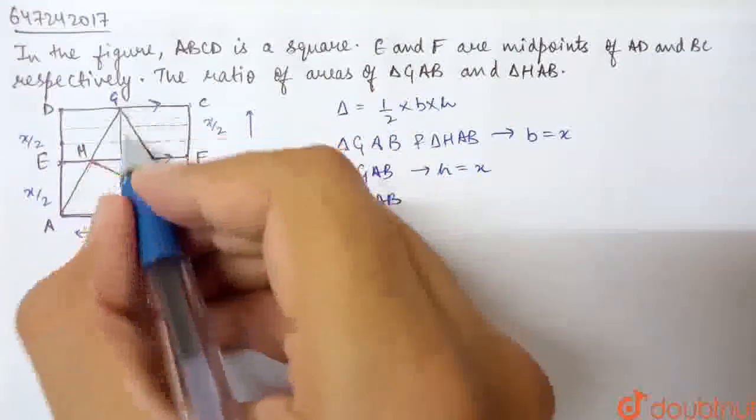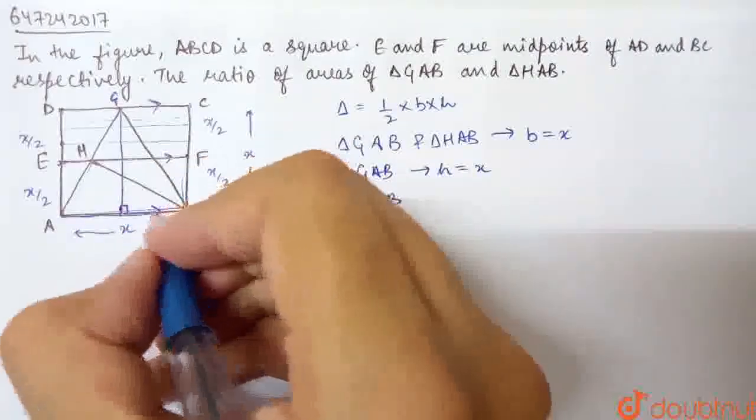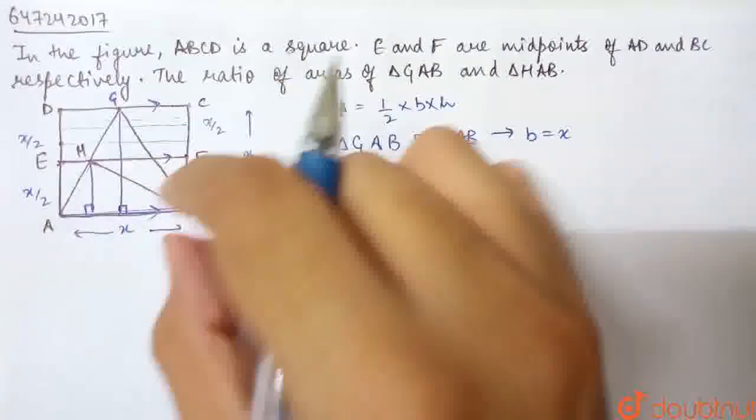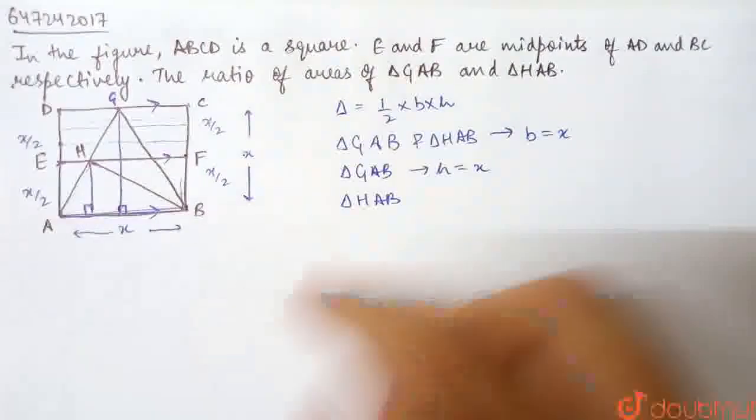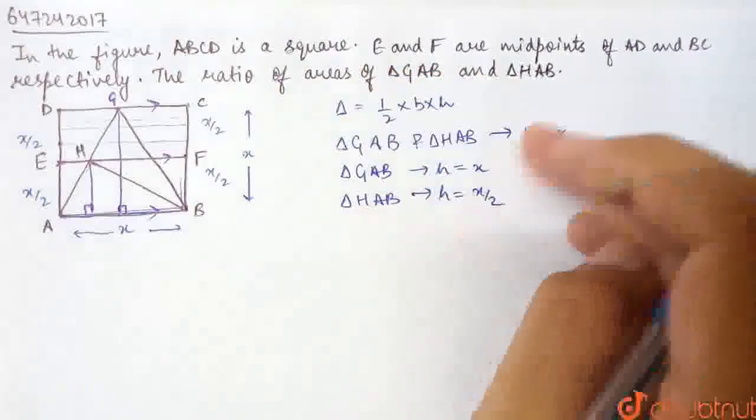It will be parallel to this line. So if I drop the altitude here, the distance between these two parallel lines is X/2. So here the value of H is X/2. So here I can write both H and B.